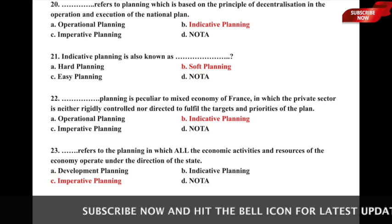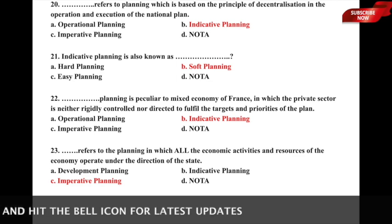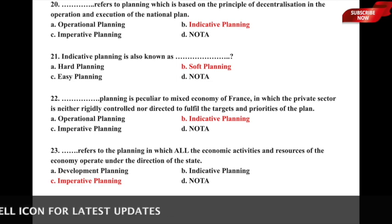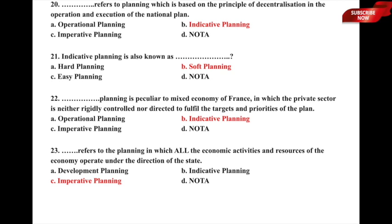Question 20: Dash refers to planning based on the principle of decentralization in operation and execution of the national plan — whether it is a) operational planning, b) indicative planning, c) imperative planning, or d) none of the above. The correct answer is option b) indicative planning.